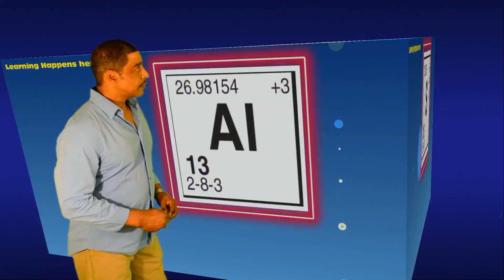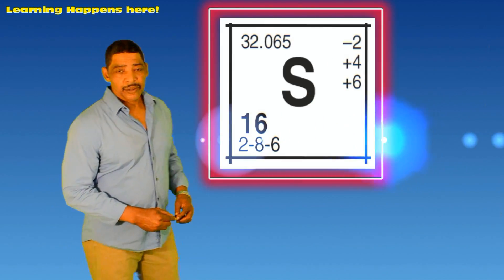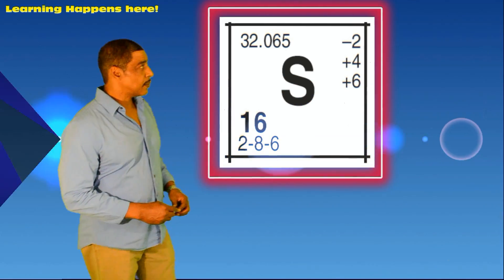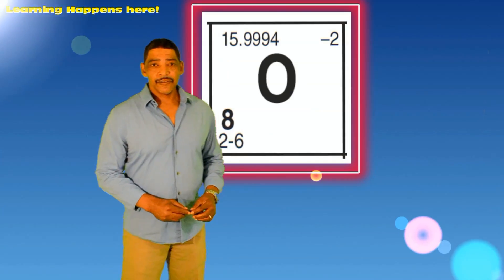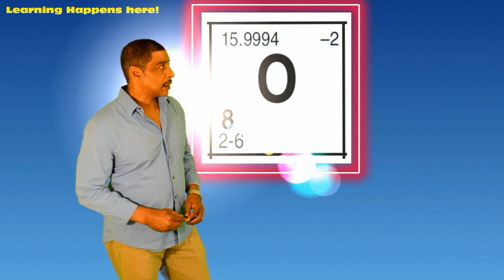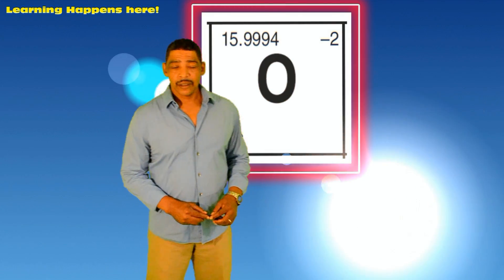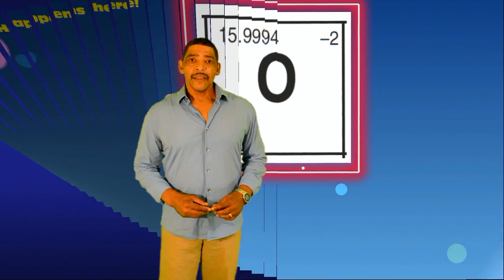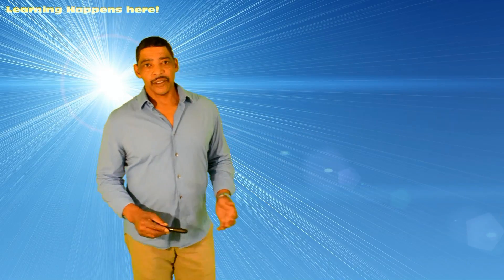For the element sulfur, 32.065 grams, and for oxygen, 15.9994 grams. These average masses may be rounded to whole numbers.